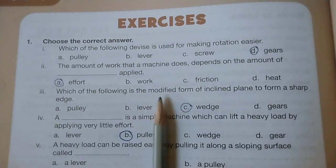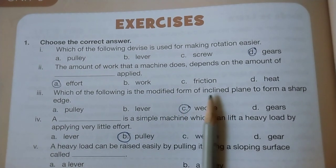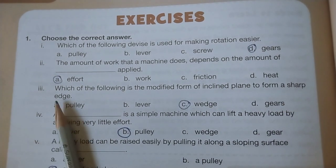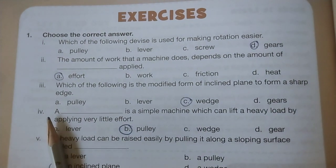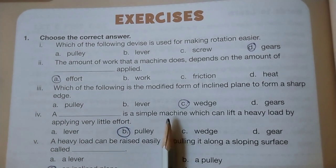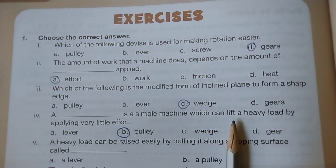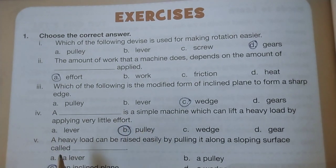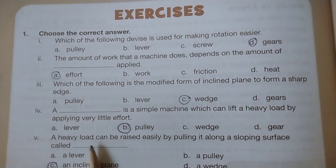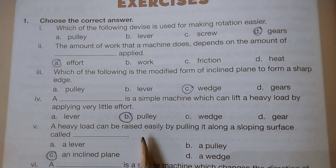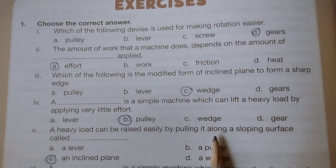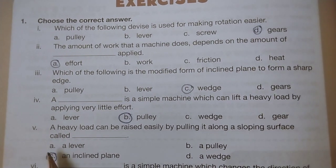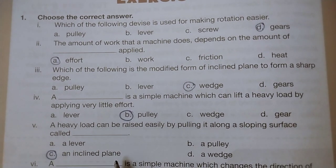Question 3: Which of the following is the modified form of inclined plane to form a sharp edge? Question 4: A pulley is a simple machine which can lift a heavy load by applying very little effort. Question 5: A heavy load can be raised easily by pulling it along a sloping surface called an inclined plane.